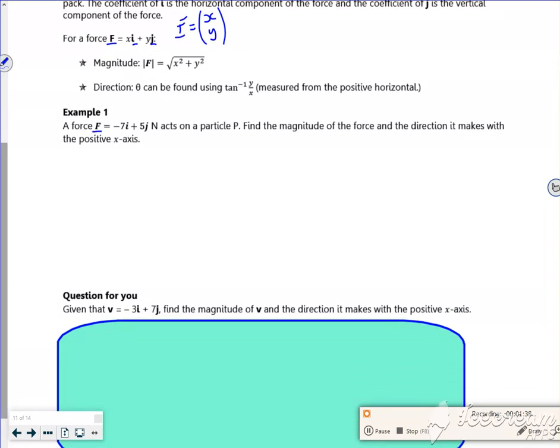So I've got a force which is minus seven and five. So this force is going that way, isn't it? So minus seven is going that way, and then five is going up, and that's an angle theta. So I want to find the magnitude.